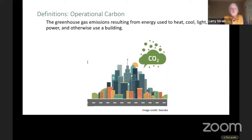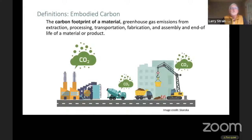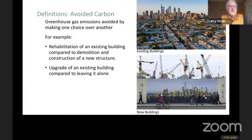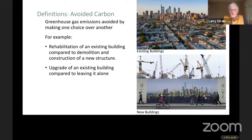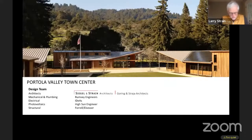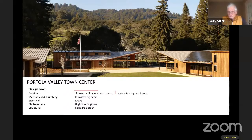We're going to talk about embodied emissions, operational emissions, and what I'm calling 'avoided carbon' — the emissions avoided by making one choice over another. For example, rehabilitating an existing building compared to demolishing and building a new one, or upgrading an existing building compared to leaving it alone. The first time I really understood the importance of embodied carbon was on the Portola Valley Town Center project — a LEED Platinum project, very energy efficient, built with a conscious effort to use low-impact, low-carbon materials.